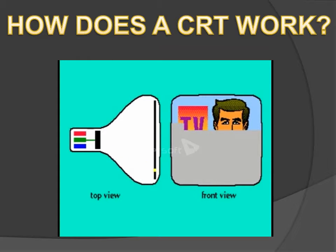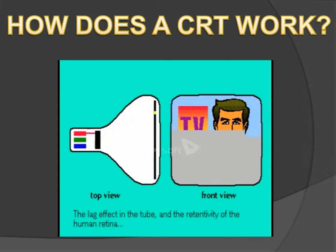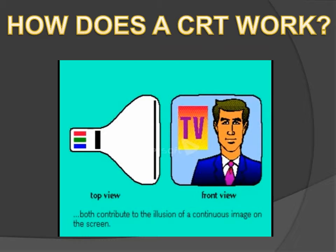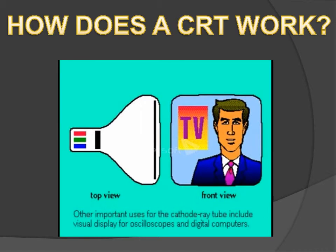In a TV, the beam scans 525 lines 30 times a second. The combination of the speed of the scan and the lag of glowing fluorescence creates the illusion of a continuous image on the screen.